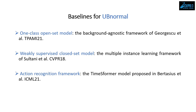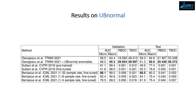We employ three different baselines for AbnormalCR. The first is an open-set model, namely the background diagnostic framework of Georgescu et al. The second is a weakly supervised closed-set model, the multiple instance learning framework of Sultani et al. The last is an action recognition framework, the TimeSformer model proposed by Bertasius et al. In this table, we present the baseline results on AbnormalCR using frame-level AUC, RBDC, and TBDC as evaluation metrics. Only the framework of Georgescu et al. can perform anomaly localization. The action recognition framework of Bertasius et al. obtained the best frame-level micro AUC, while the method of Georgescu et al. obtained the best localization performance.